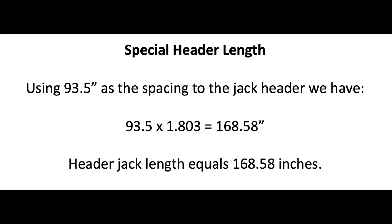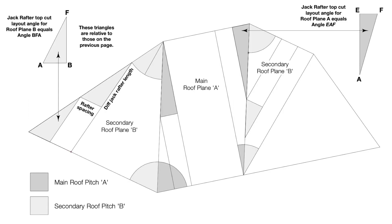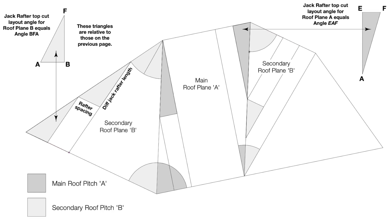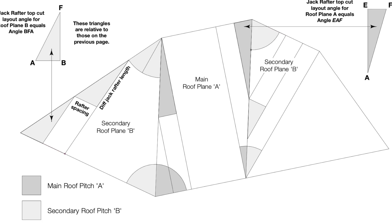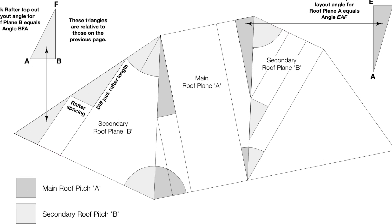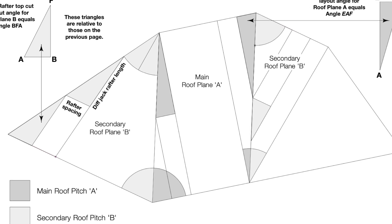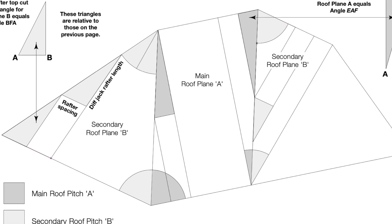To find the length of the special rafter at 93.5 inches from zero, we have 93.5 times 1.803 is equal to 168.58 inches. Using this approach, one can find the length of any jack rafter for any roof pitch from 2 to 18 over 12 and for any combination of special spacings with only the chapel square, a pencil, and a scrap piece of wood.